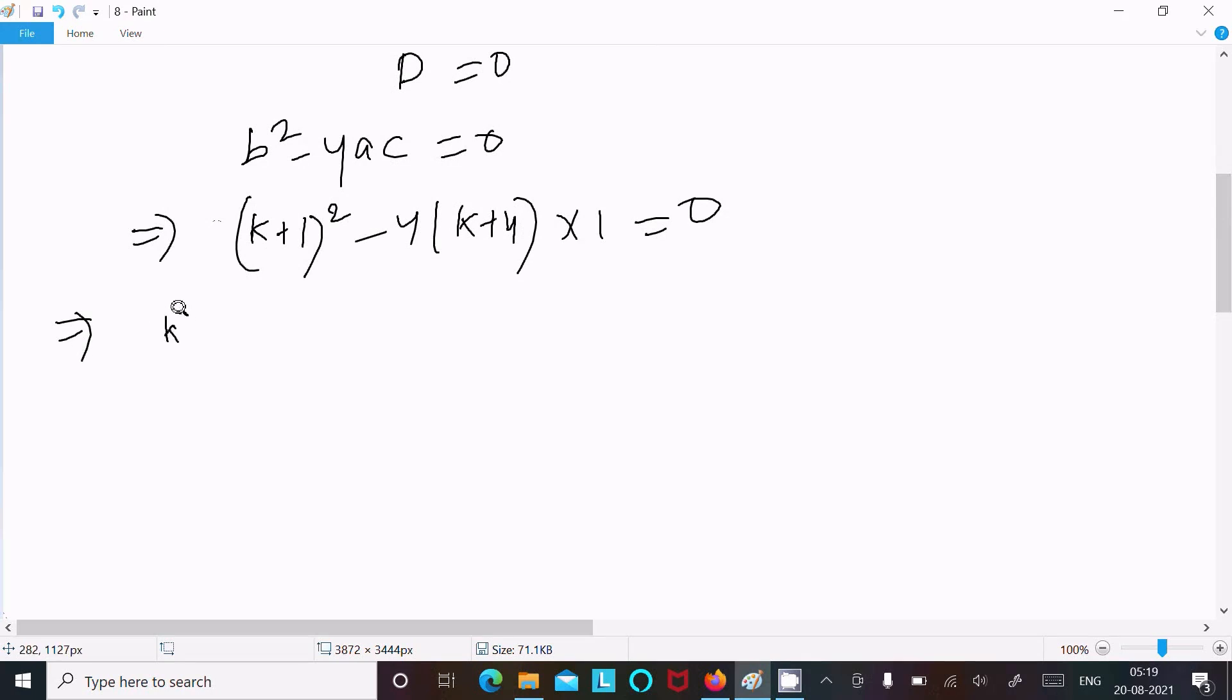Let's use the (a+b)² formula. This is k² + 1 + 2k minus 4k minus 16 = 0.